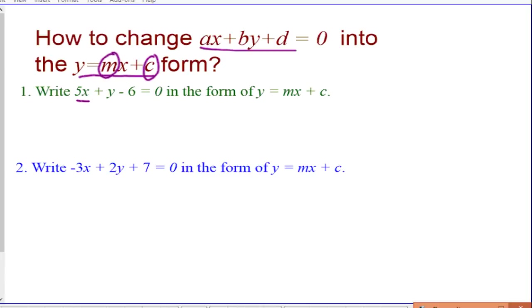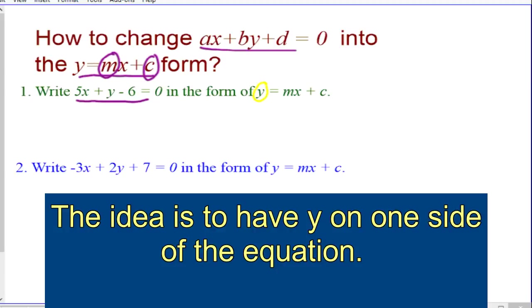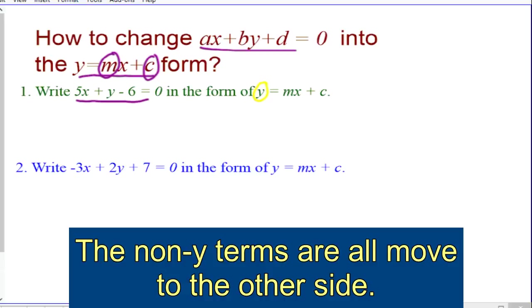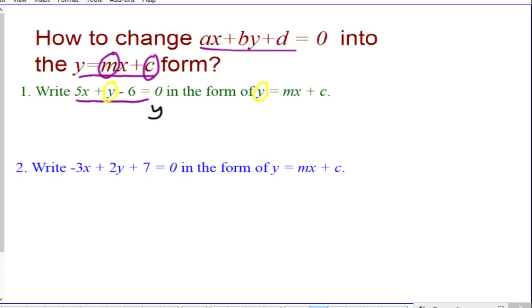So here's the first question, and I want to change it into this form. Basically you observe that I need to put Y to one side, or Y being the subject. So I need to isolate Y, so anything that is not Y has to go to the other side.